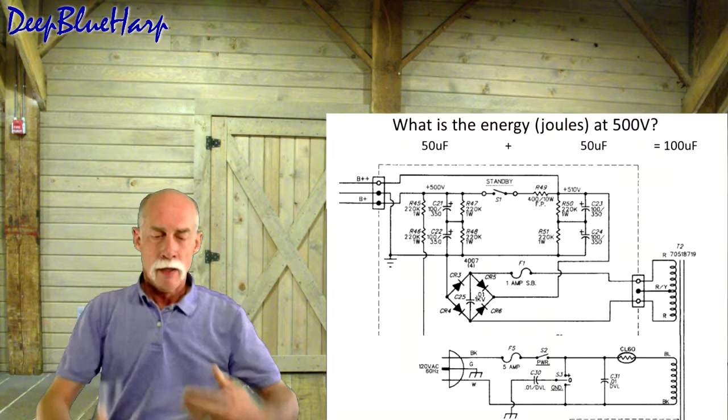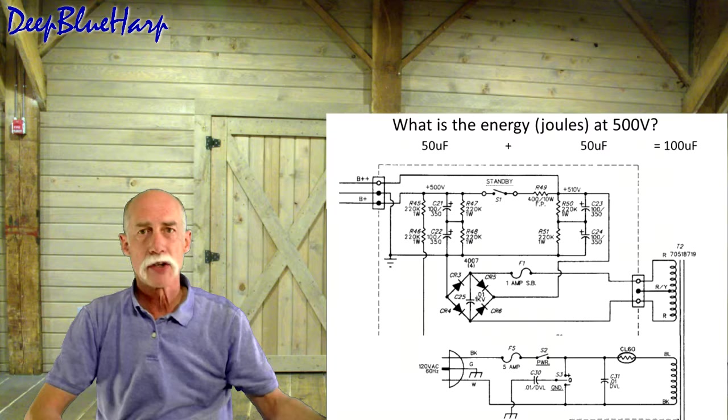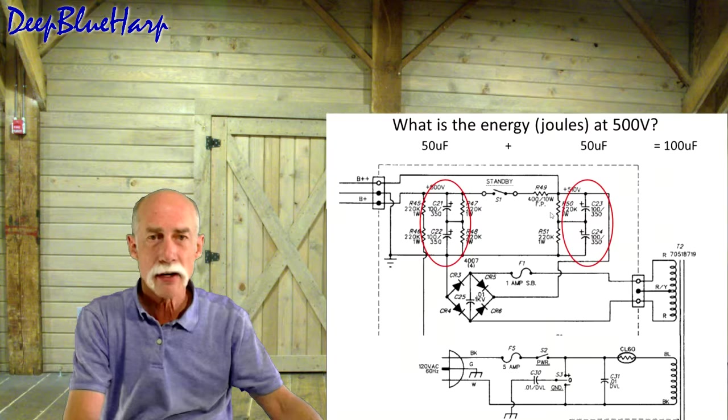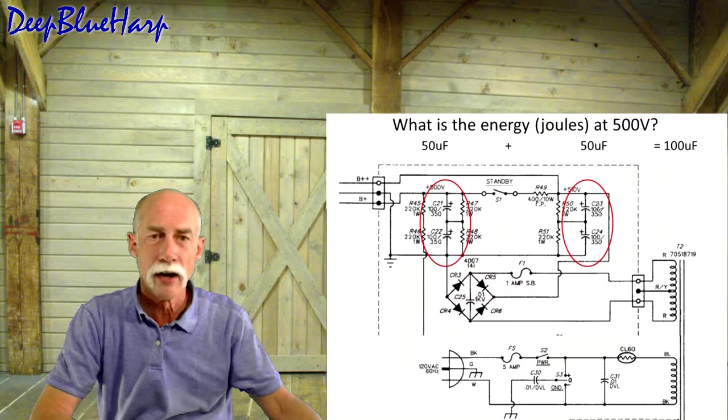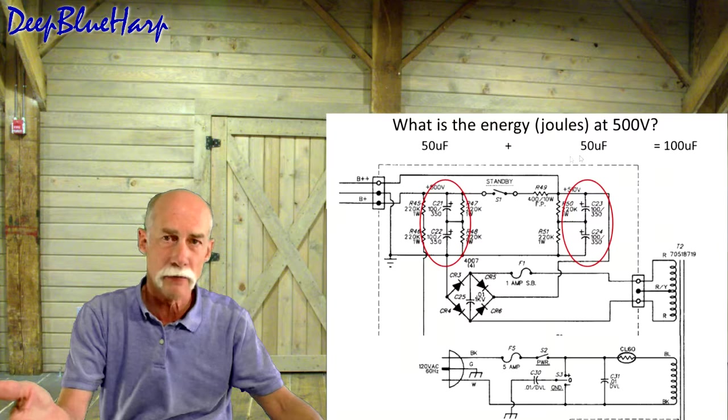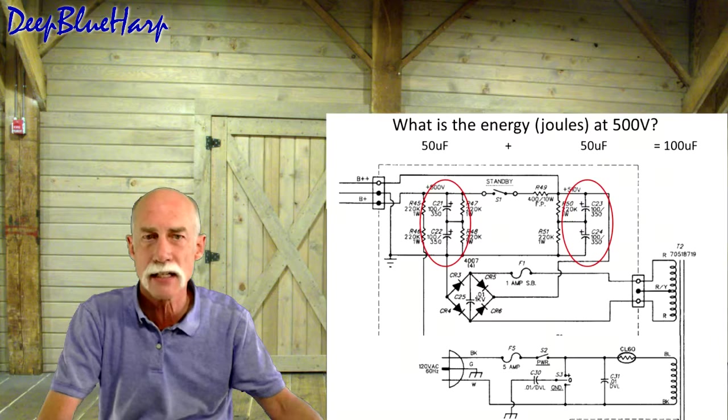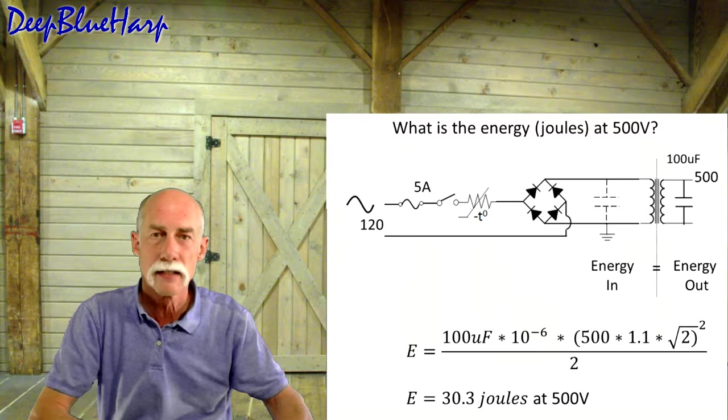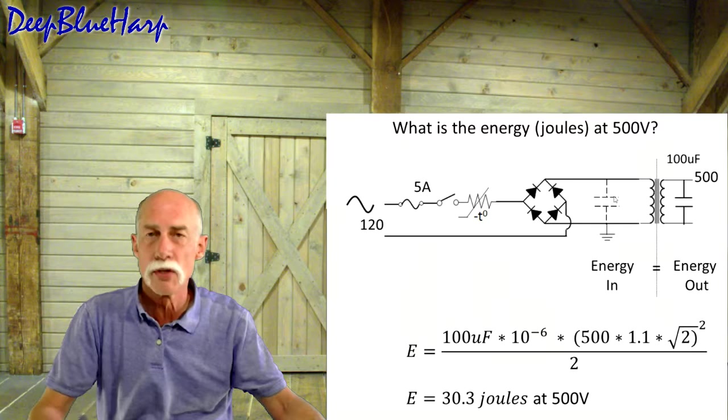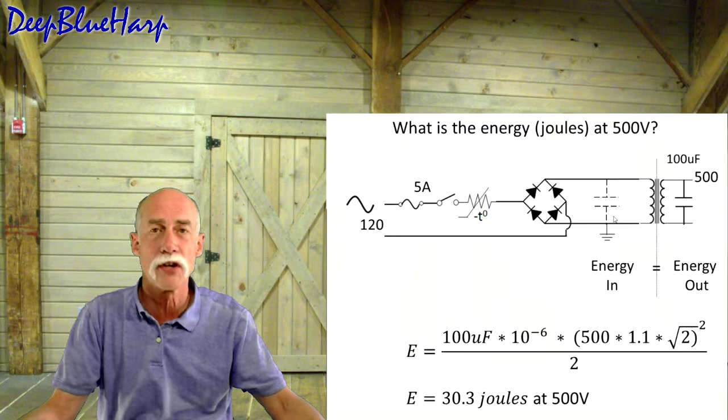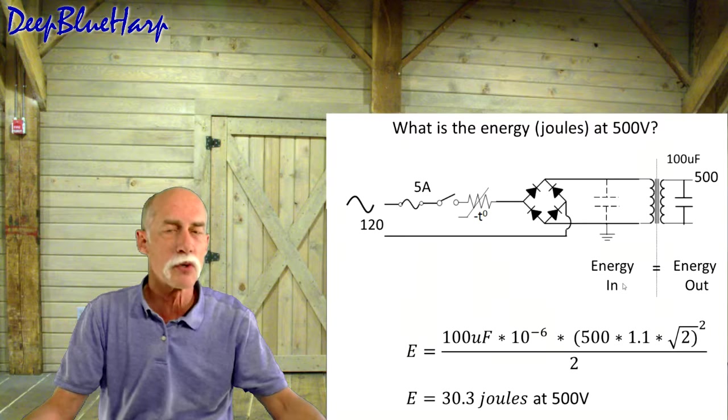We're not done yet. The energy that we need to calculate is on the secondary side of the transformer. We have the filter capacitor and the reservoir capacitor. Both of those are 100 microfarads in series, or 50 microfarads. Add that together to 100 microfarads, and it's at 500 volts on the secondary side. So we need to go through and calculate the energy the thermistor has to carry safely on the secondary side.